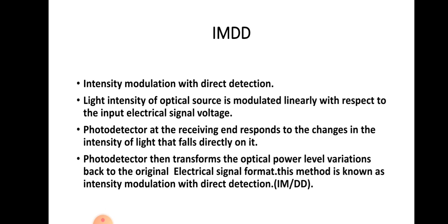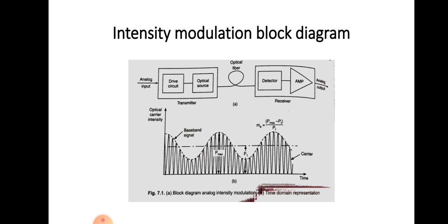The transmitted signal through the optical link is applied directly to the photodetector in the receiver, which converts the collected optical field into current or voltage. This is the basic block diagram — the transmitted signal through the optical link is applied directly to the photodetector at the receiver side, which converts the collected optical field into current or voltage.